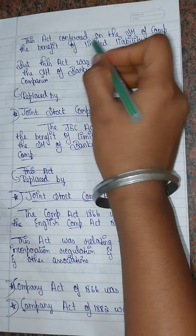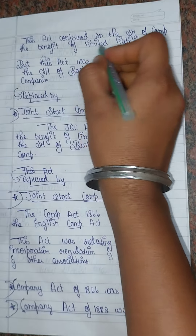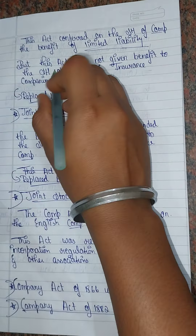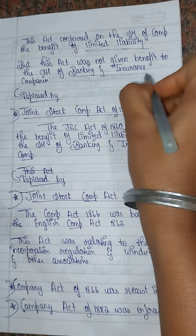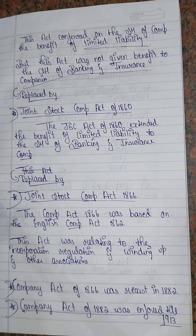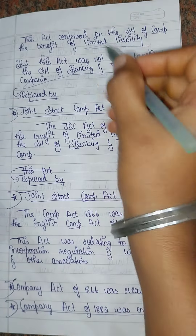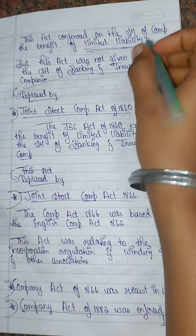The Joint Stock Companies Act 1857 conferred on the shareholders of the company the benefit of limited liability. However, this Act did not give the benefit of limited liability to the shareholders of banking and insurance companies.